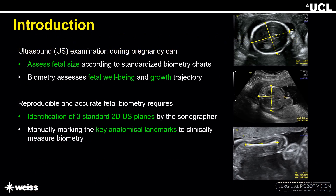Ultrasound examination during the second trimester can assess fetal size according to standardized biometry charts. This biometry can in turn help in assessing fetal well-being including gestational age and growth, or monitoring for any abnormality. In order to obtain reproducible and accurate fetal biometry, the sonographer requires to first identify the three standard ultrasound planes and then manually mark key landmarks on these planes to clinically measure biometry.